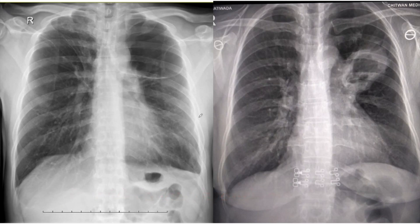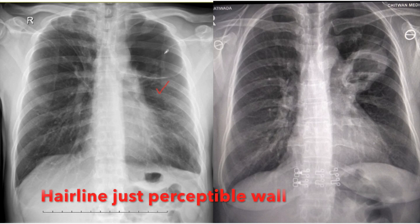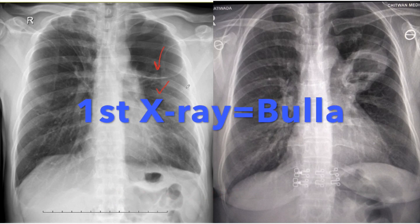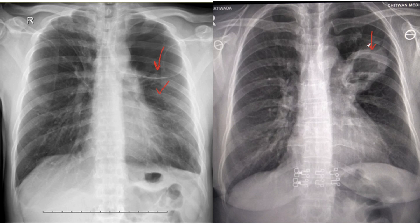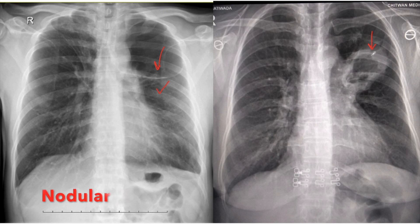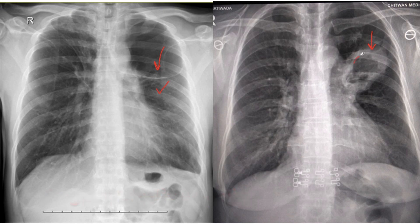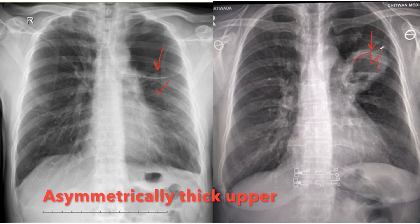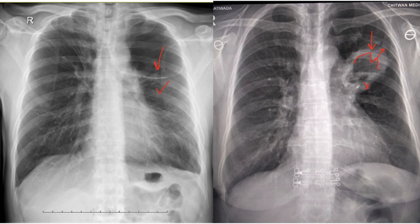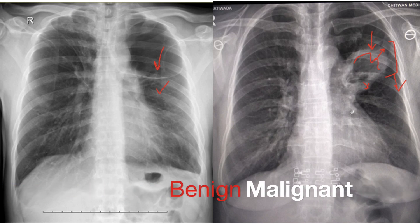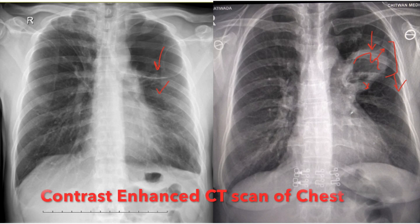Finally, coming to our query. In the first X-ray, we can see that the lucency in the left upper zone has a hairline, just-perceptible wall — hence, it is a left upper lobe bulla. In the second X-ray, the lucency in the left upper and middle zone has a definite wall. This is a cavity, and the wall appears thick, nodular, and asymmetrically irregular on the inner aspect — more thick on the upper region and less thick on the lower aspect. So this feature suggests that this cavity is a malignant cavitary lesion. Sometimes on an X-ray we may be confused in differentiating benign from malignant cavitary lesions, and that problem can be resolved by a contrast CT scan.